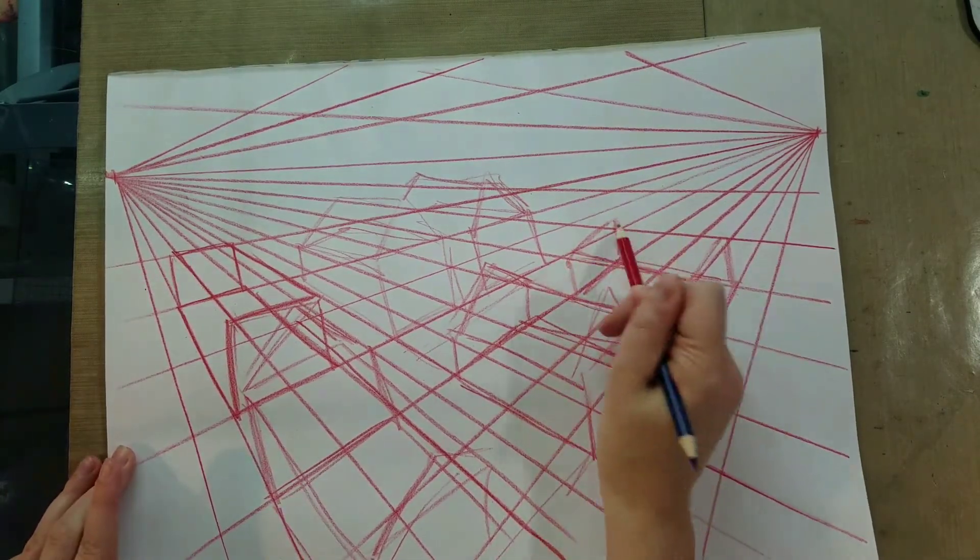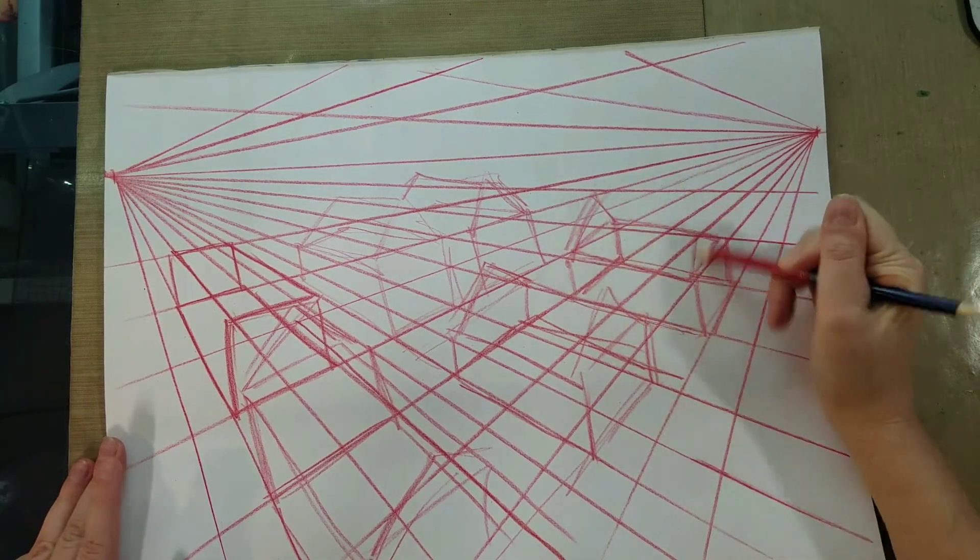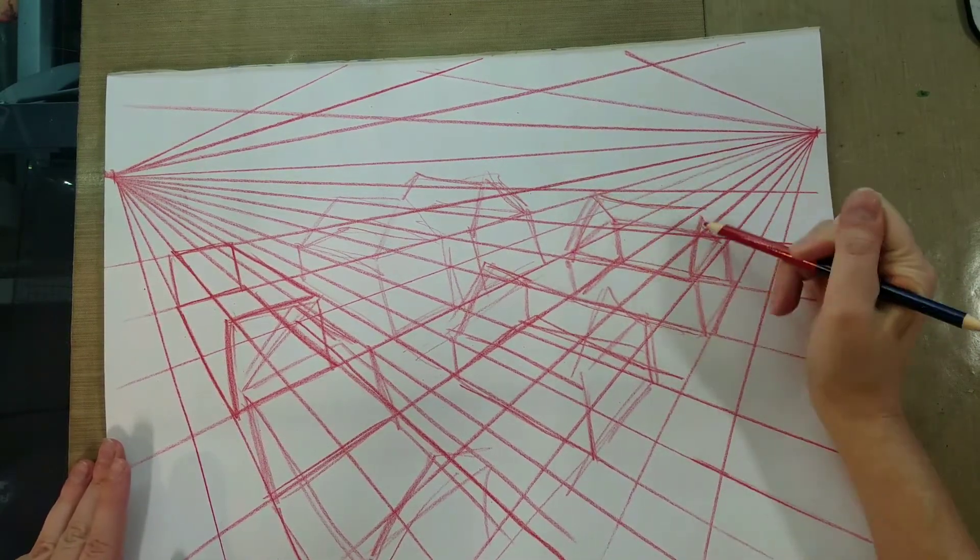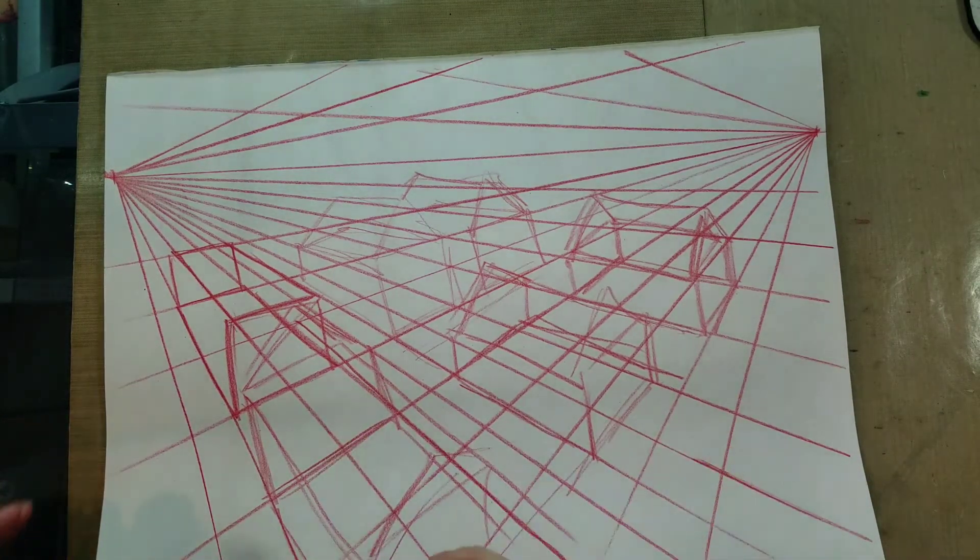And there's all sorts of pre-made grid resources online. There's even brushes for Photoshop where you can just plunk a grid down in your image which makes it a lot easier to quickly sketch an environment.